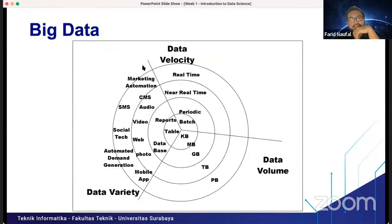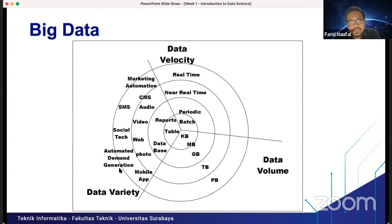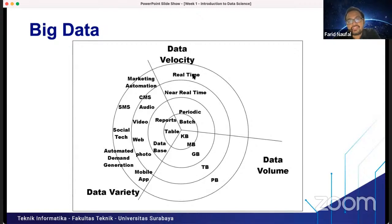Let's discuss big data. Comparing data velocity, data variety, and data volume — for example, for mobile apps, automated demand generation, social technology, SMS, and marketing automation, this is real-time data. Real-time data will have more data volume. Like our previous example, Google processes 20 petabytes a day, and it is real-time. YouTube also has real-time data with a large data volume.